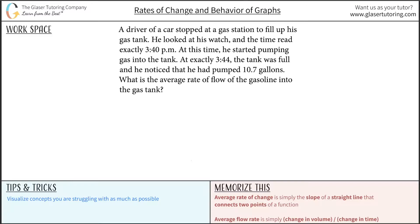A driver of a car stopped at a gas station to fill up his gas tank. He looked at his watch, and the time read exactly 3:40 p.m. At this time, he started pumping gas into the tank. At exactly 3:44, the tank was full, and he noticed that he had pumped 10.7 gallons. What is the average rate of flow of gasoline into the gas tank?